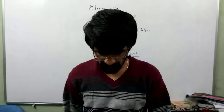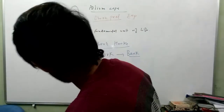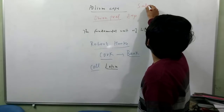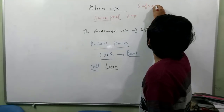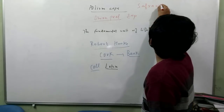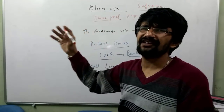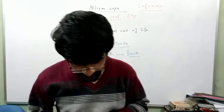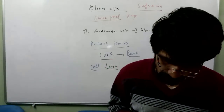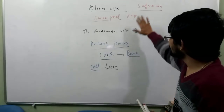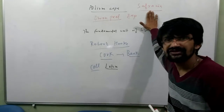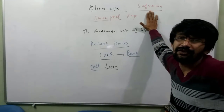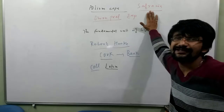It is up to us to use something called safranin. Safranin is a pink color stain which we basically use in biological science laboratories. You can dip it into the dilute solution of safranin and then go further with your experiment.